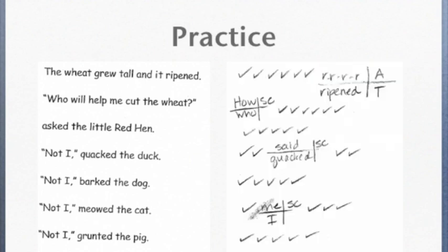Here's what your running record should look like. You'll notice that the child was attempting the word ripened by sounding it out, appealed by asking what is that word, and the teacher told the word.